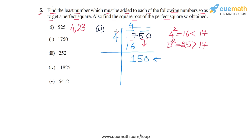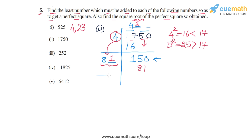For the divisor of the next step, we double 4 to get 8. We find the largest digit to place next to 8 such that the product is ≤ 150. That digit is 1, because 82 × 2 would exceed 150, so 81 × 1 = 81. Subtracting: 150 − 81 = 69. There are no more digits left, so division stops. We get a quotient of 41 and a remainder of 69.